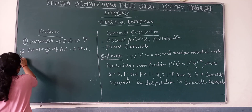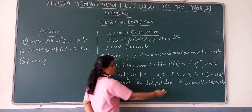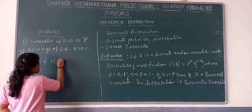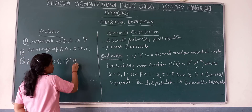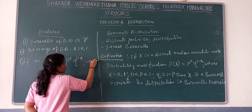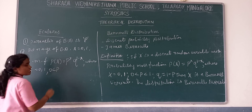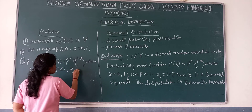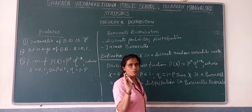The third feature is the probability mass function of Bernoulli distribution. The probability mass function is P(x) = P^x × Q^(1−x), where x = 0, 1, P is greater than 0 but less than 1, and Q = 1 − P.